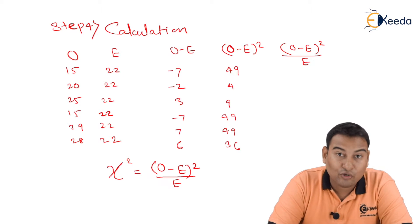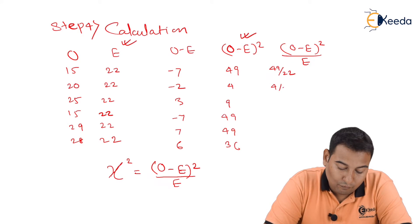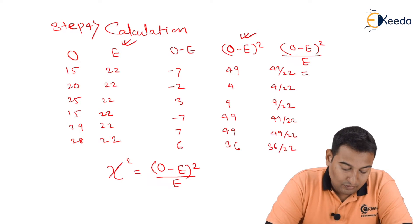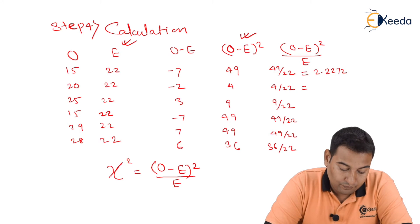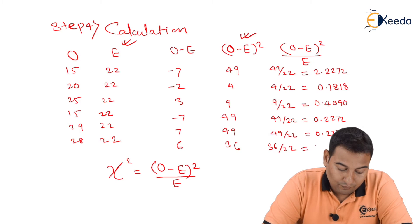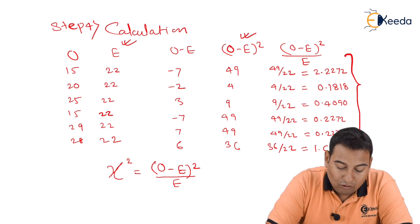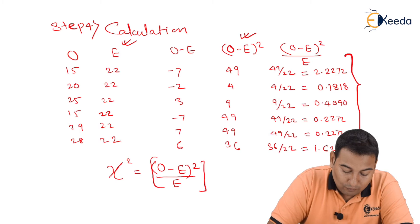Upon expected. So observed minus expected the whole square upon expected - that means I'm going to divide this particular column with this. That means 49 by 22, 4 by 22, 9 by 22, 49 by 22 again, 49 by 22, and lastly 36 by 22. So if I divide I'll get 2.2272, 0.1818, 0.4090, 2.2272, 2.2272, 1.6363. If I add all this row - see I'm making the formula also summation.